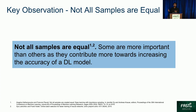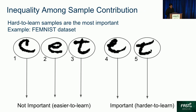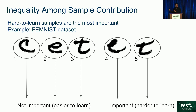It turns out that not all samples are equal in DL training. Some samples are more important than others, as they contribute more towards increasing the accuracy of the deep learning model. So maybe we could cache these important samples. To understand what contributing the most means, let's look at this example of text recognition on the feminist dataset. Samples 1, 2, and 3 are very easy to understand, but samples 4 and 5 — a deep learning model might mistakenly assume them to be a C instead of an E and T. Training more on these hard-to-learn samples can lead to faster accuracy convergence, and hence these are known as important samples.